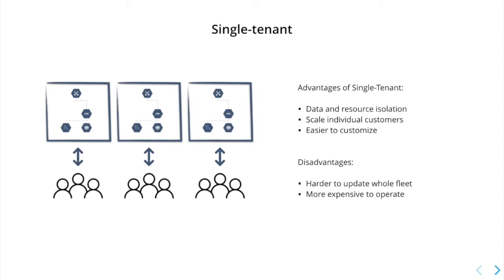which makes instances easier to customize and scale for each customer. But there are also disadvantages. A one-to-one relationship between customer and SaaS instance can make it more difficult to update all instances in the fleet, and resource isolation can result in a greater cost per customer to operate.